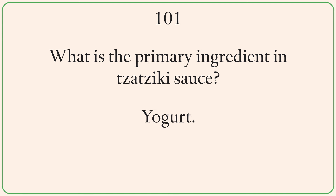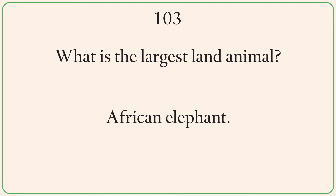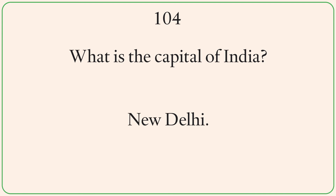What is the primary ingredient in tzatziki sauce? Yogurt. Where is the Golden Gate Bridge located? In San Francisco, USA. What is the largest land animal? African elephant. What is the capital of India? New Delhi.